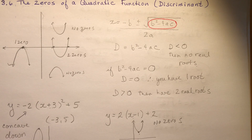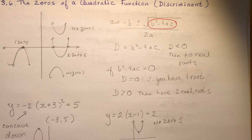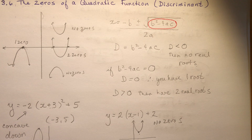Today we're looking at the zeros of a quadratic function — specifically, how to find how many zeros there are using the discriminant. I'm going to show you some tricks on how to find the discriminant, what it means, how you can tell how many zeros there are, and then we'll do some examples. It's going to be a short lesson.